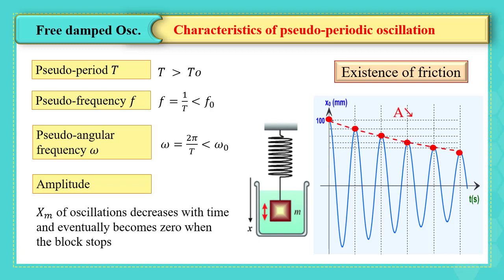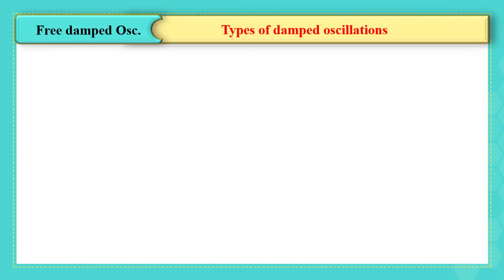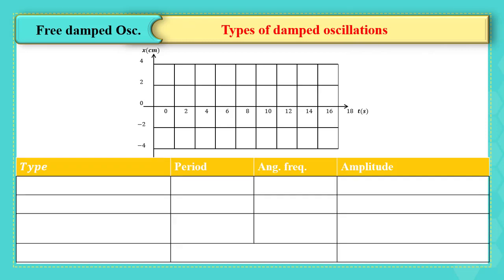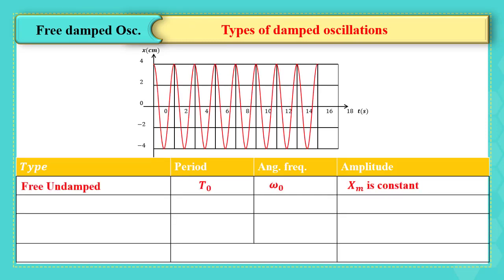There are different types of damped oscillations. Let's remember the free undamped mechanical oscillation, where it has a proper period T0, proper angular frequency omega zero, and the amplitude constant.